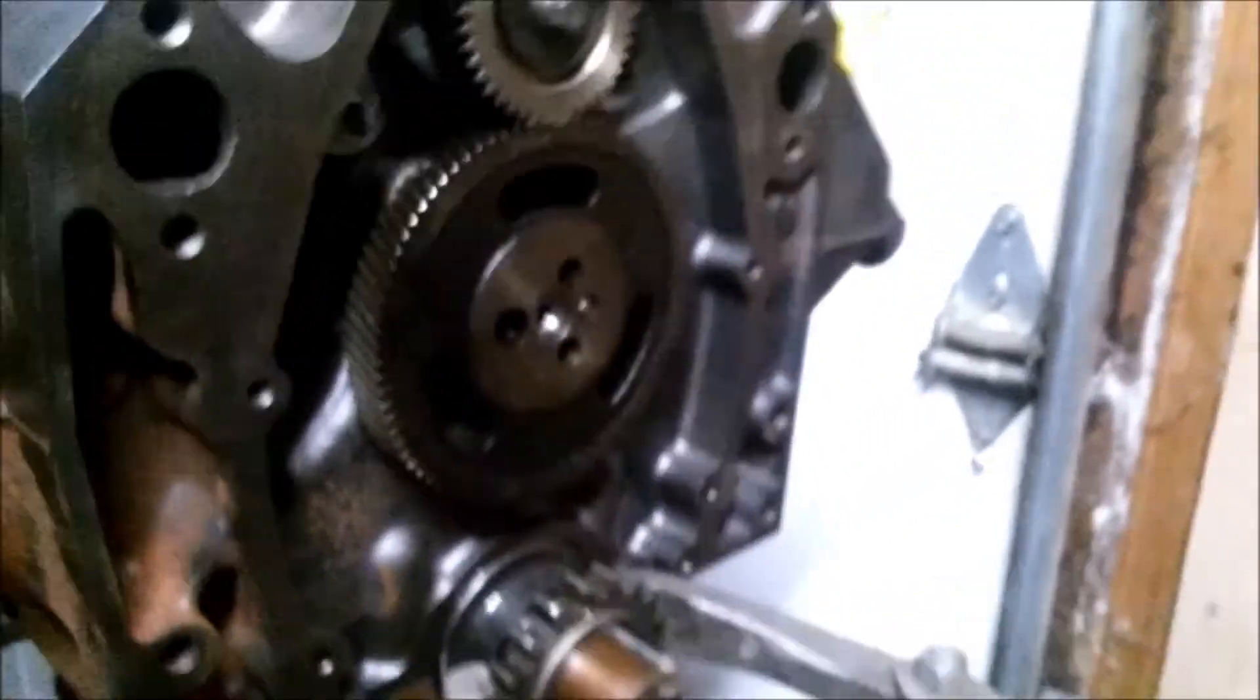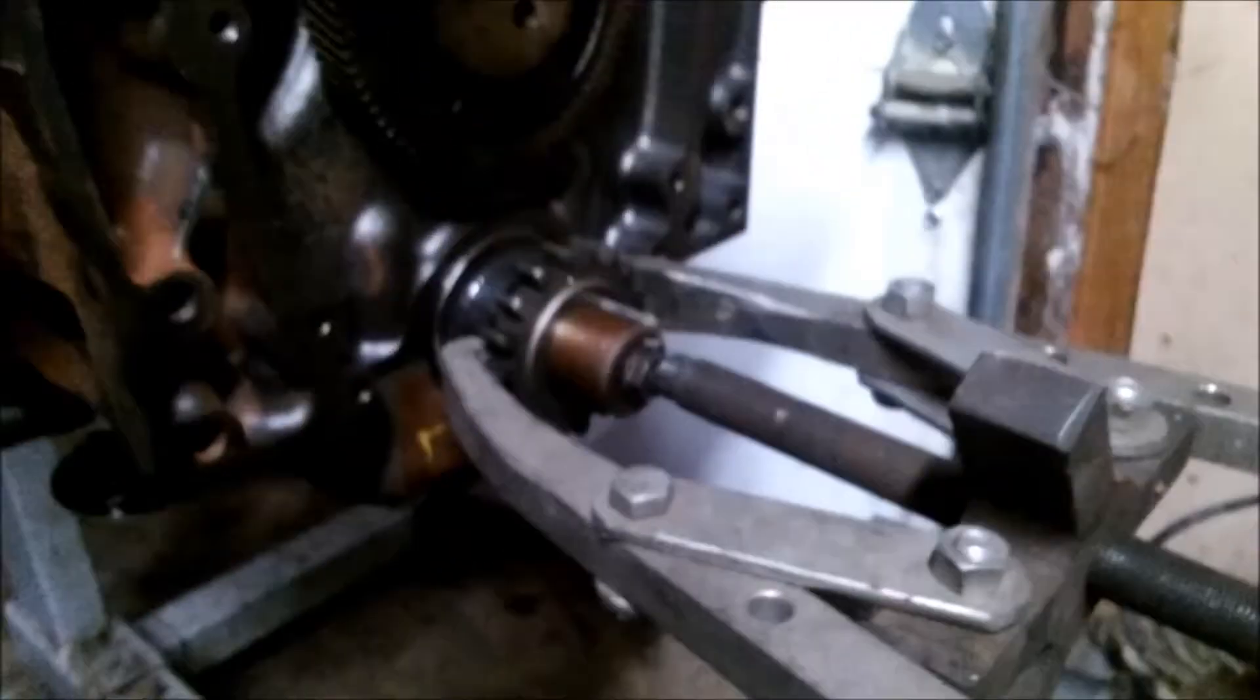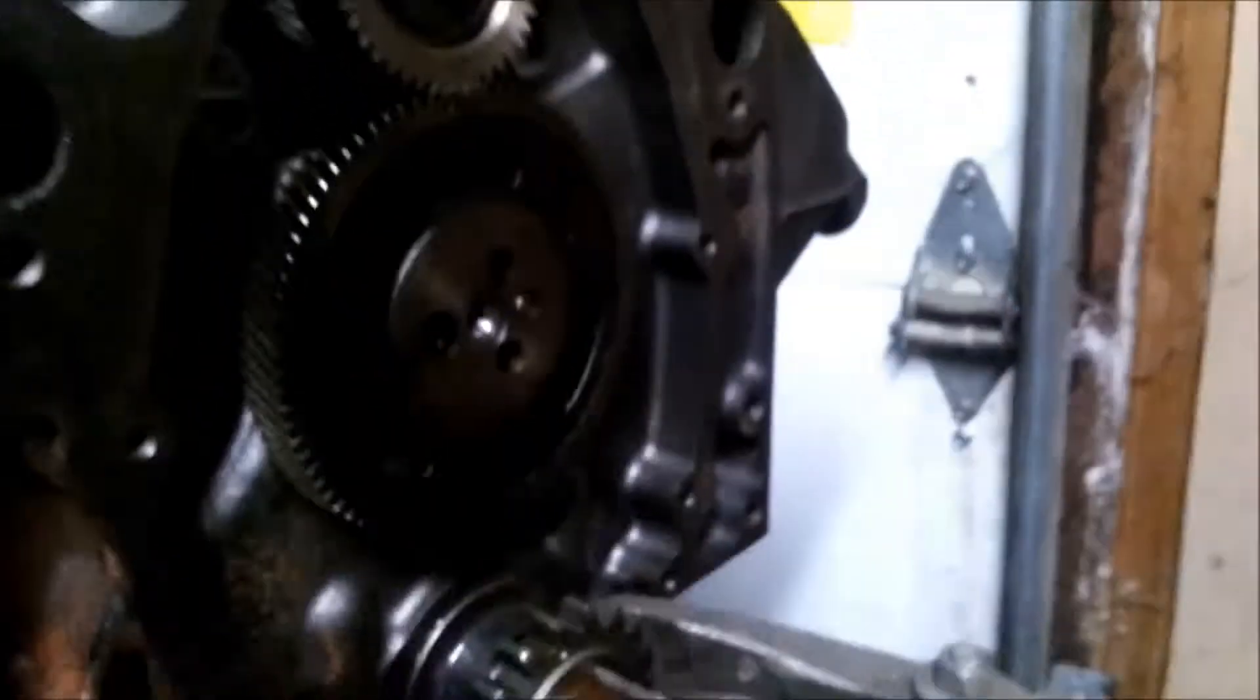The basics of removing a crank gear on a Chevy small block. This is a 4.3 with a balance shaft, same thing as a Chevy 350 except it's got this extra gear up here.